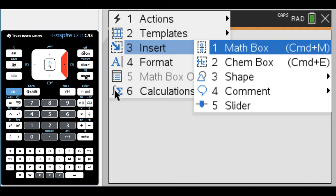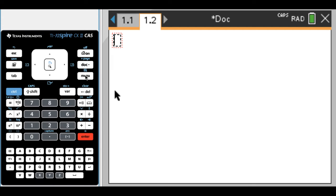There's probably a shortcut on the handheld too. I don't know it offhand. So I'm going to insert a math box. And in this math box, I'm going to type the thing that I want to convert to other things. I'm just going to type - it doesn't really matter what you type at this point.